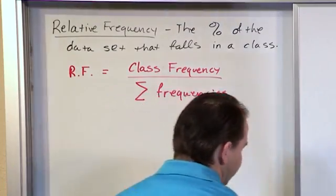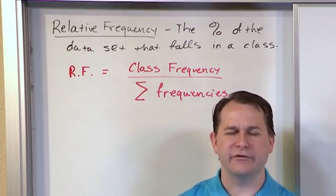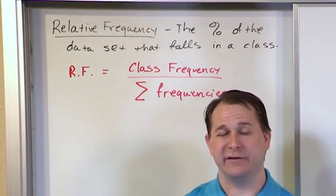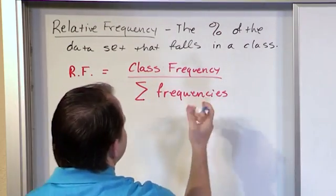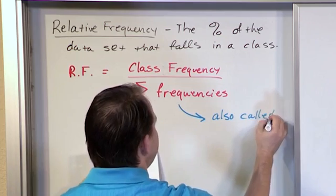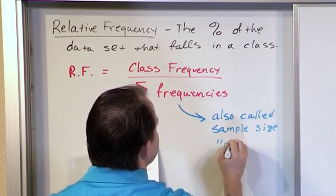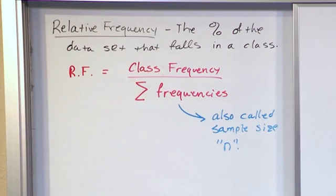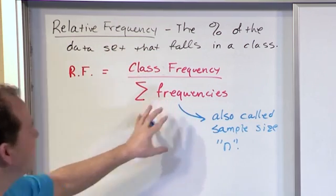Remember, when we have a frequency distribution, all frequencies are listed - data we've collected and put into buckets. If we add up all frequencies, that means how many people responded, the sum of our raw data. This is also called the sample size n. n is typically used to represent sample size. So relative frequency is the class frequency divided by all frequencies in your table.